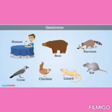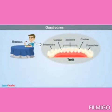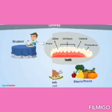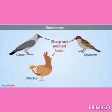Omnivores have different kinds of teeth which help them to eat plants as well as flesh. Omnivore birds have sharp and pointed beaks for eating both plants and small insects.